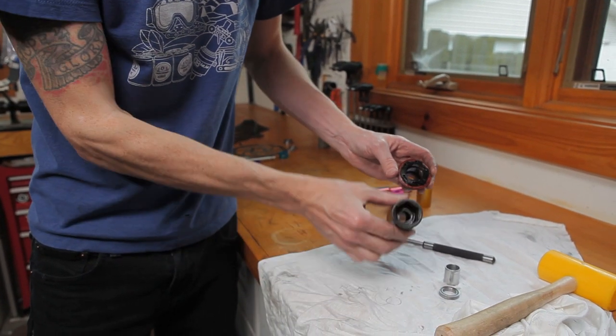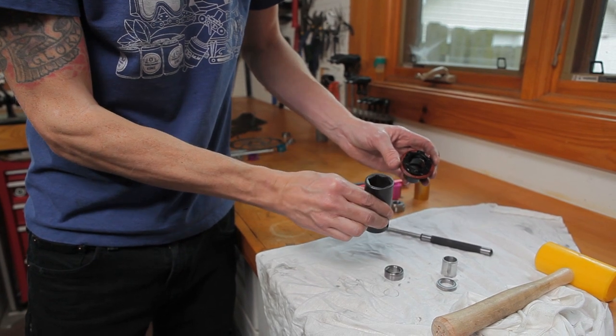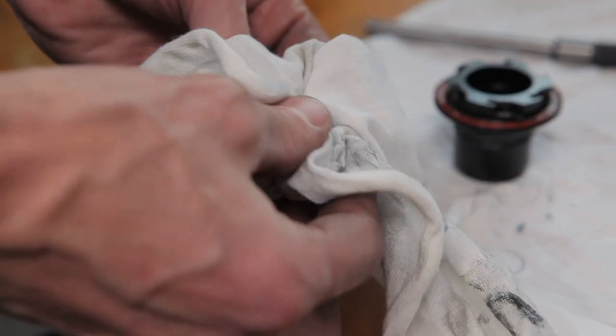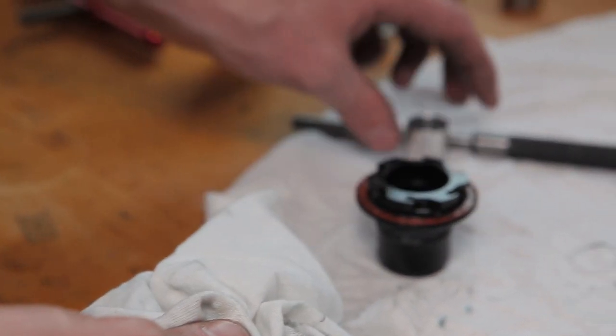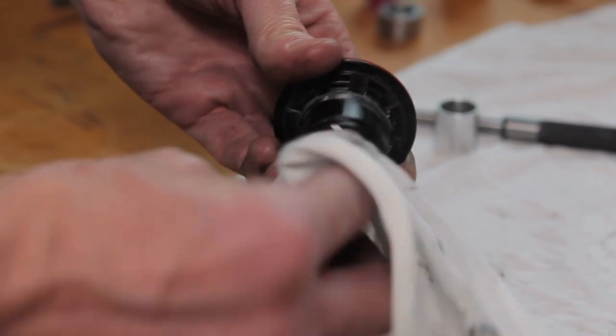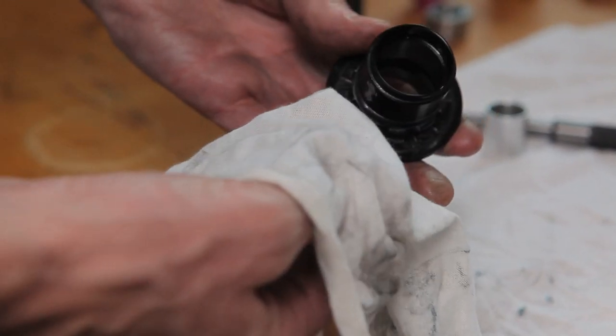Once both bearings are removed, clean the spacer and the freehub shell. You'll notice the double row bearing does not have the LLU seal. This bearing can be pressed in in either orientation.